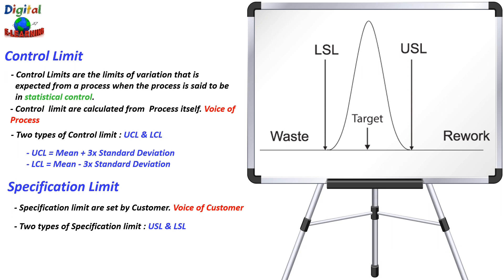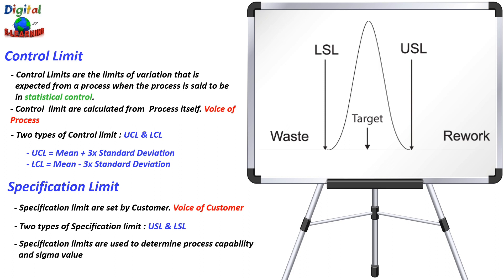These limits are often, but not always, symmetric. If your part falls within the upper and lower specification limits, it will be meeting your customer expectations. But if it falls outside this range, it will be rejected. Specification limits are used to determine the process capability and the sigma value.